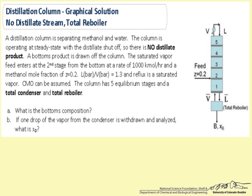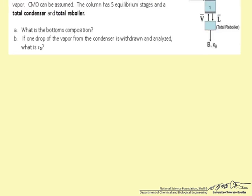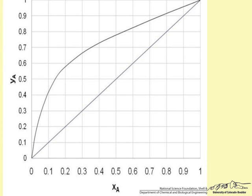Answer the following questions. Part A: What is the bottoms composition? Part B: If one drop of the vapor from the condenser is withdrawn and analyzed, what is XD? Use the diagram and the graph of the equilibrium data, Y_A versus X_A.